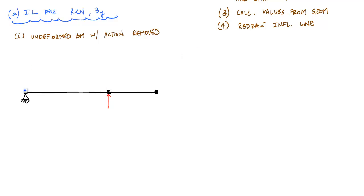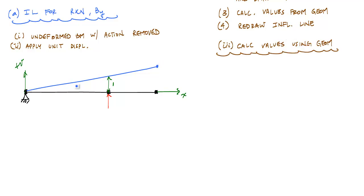The deflected shape looks like this, and this distance here is a unit displacement where positive deflections are upwards. Now that we've applied the unit displacement, the next thing we need to do is calculate values using geometry. This is just a linear deflected shape, so once you have one, you've got them all by similar triangles.